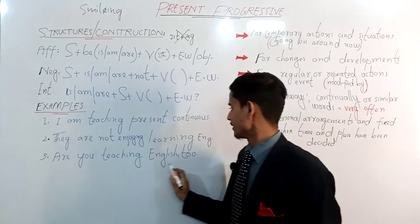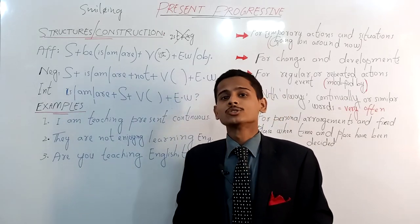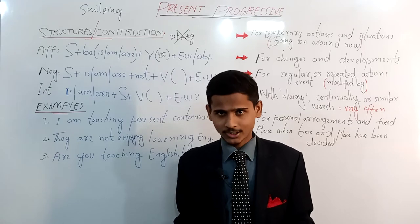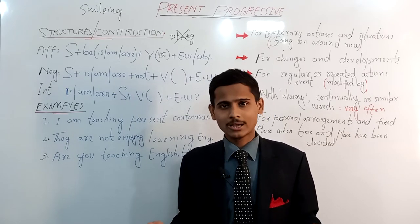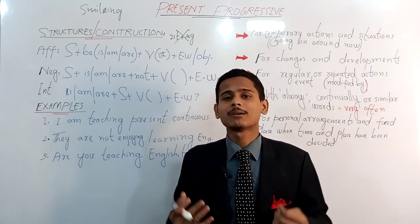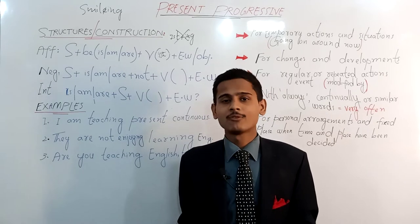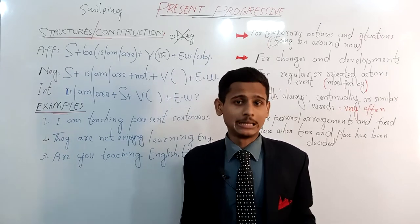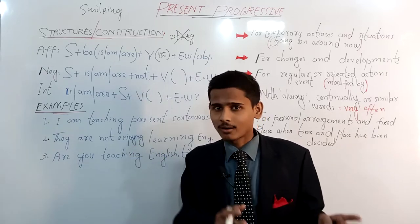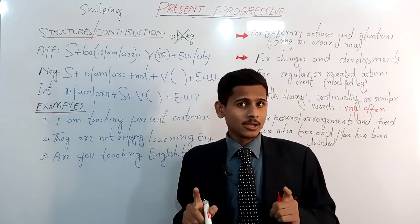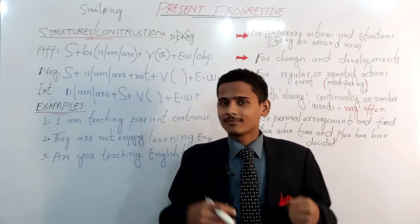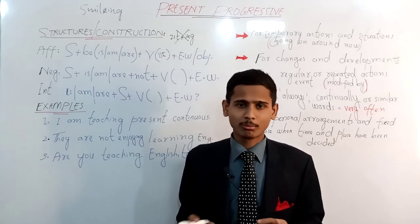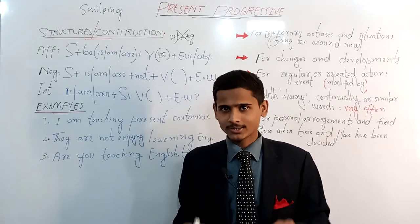Moving towards the interrogative, the example is: 'Are you teaching English too?' I changed 'I am teaching' to use the second person pronoun 'you.' This question confirms whether one more action by you is happening right now. Here are three more spoken examples: 'She is learning English rapidly,' 'They aren't taking tea,' and 'Are they really strutting — looking at you, being arrogant, trying to make you feel jealous?'